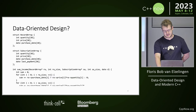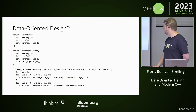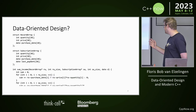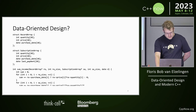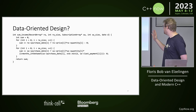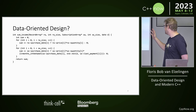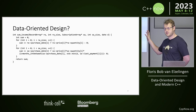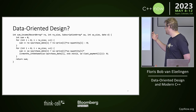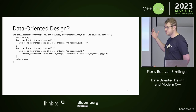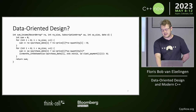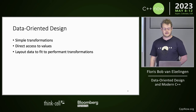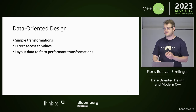Now let's talk about the force that's been shaping C++ for the last couple of years: data-oriented design. So is this data-oriented design? We have some C arrays, a lot of pointer arithmetic. We have these raw for loops. We know not to do this. So is this data-oriented design? Not necessarily.